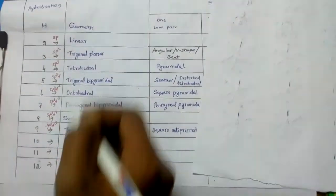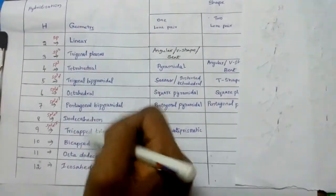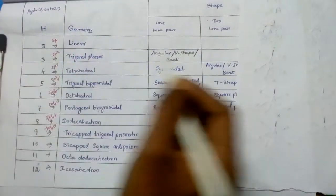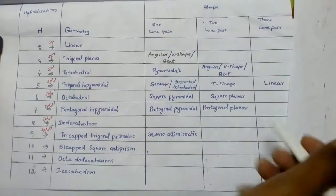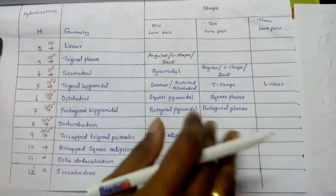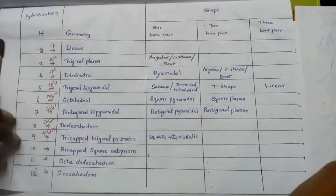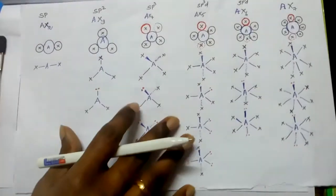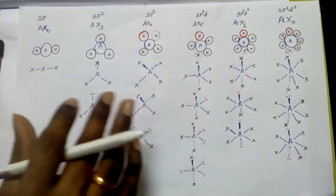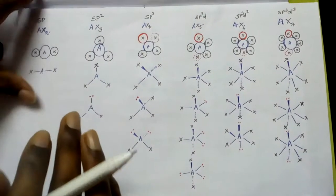Based on the hybridization, you can predict the geometry. Based on the lone pairs, you can predict the shape. Please note this table. If you know the geometry and the shape, you can predict the structure. This is the trick here — in this video, you will learn how to remember the geometry, shape, and structure.